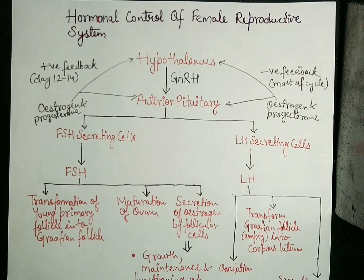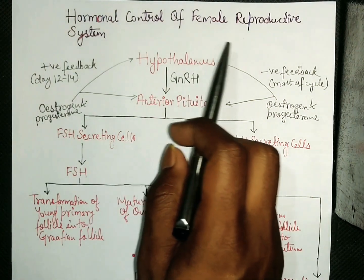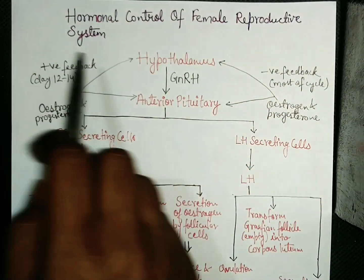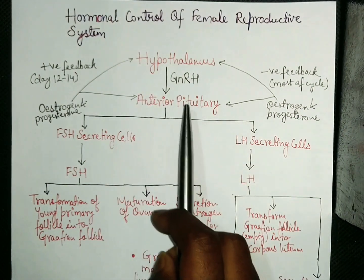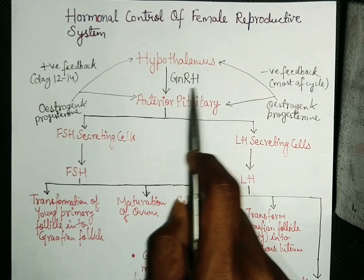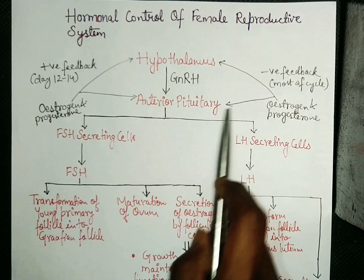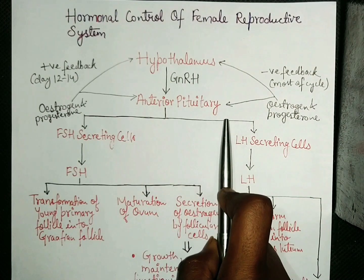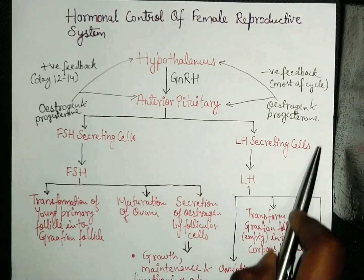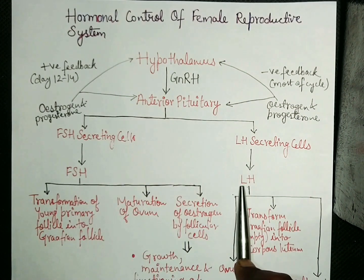In this lecture, we will discuss the hormonal control of the female reproductive system. This system starts from the hypothalamus, which releases GnRH (gonadotropin releasing hormone) to stimulate the anterior pituitary gland. The anterior pituitary gland then stimulates FSH-secreting cells and LH-secreting cells to release FSH and LH respectively.